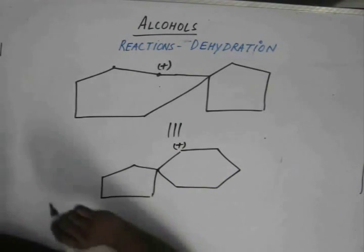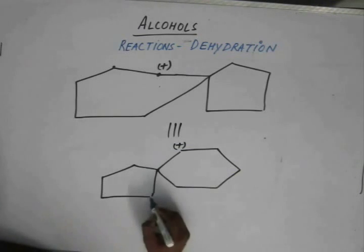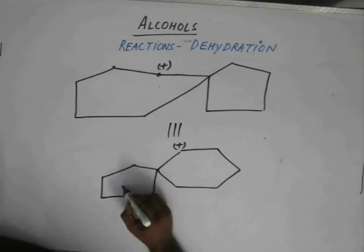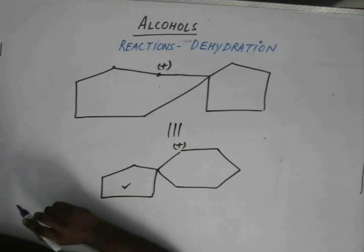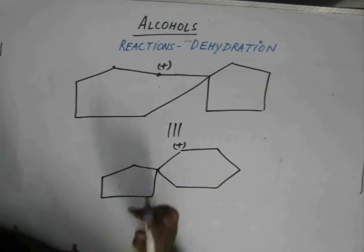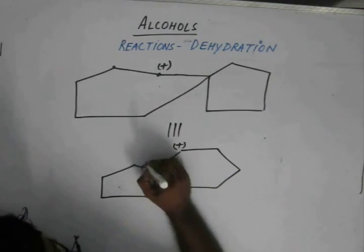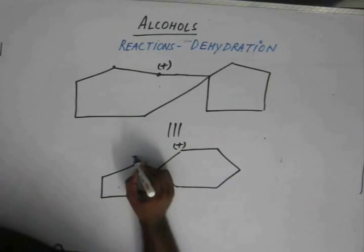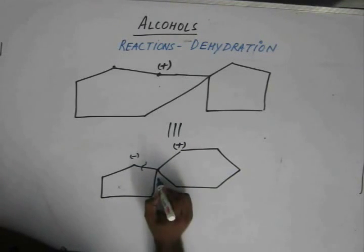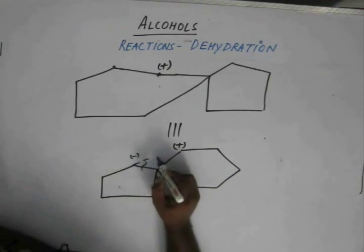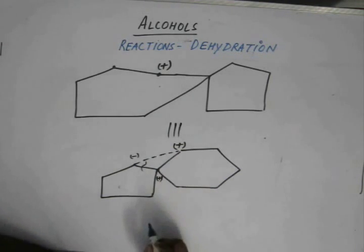Now, a subsequent ring expansion of this group will also take place. This bond breaks leaving a negative charge over here and a positive charge over here. Now, this negative and this positive are combined.